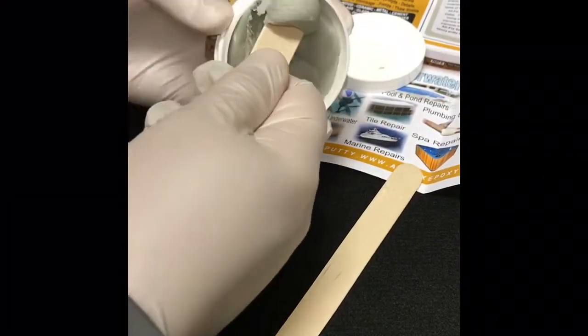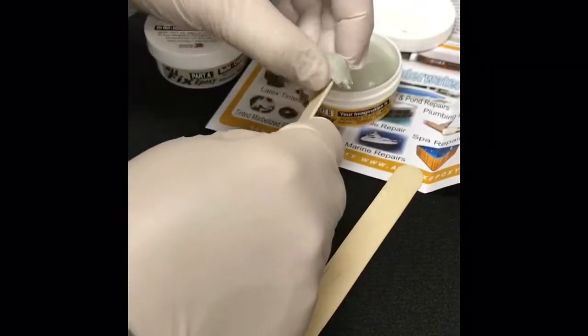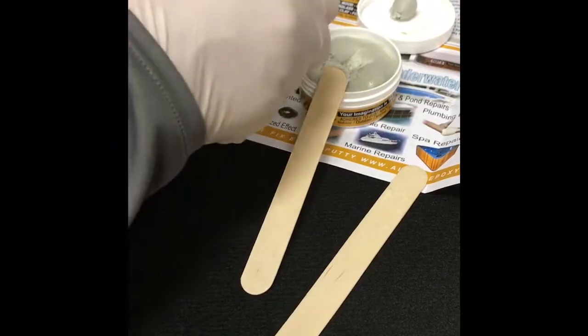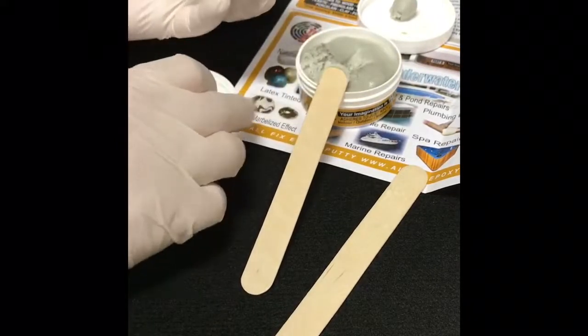Allfix is a self-hardening, two-part epoxy with a work time of one to three hours and fully cures rock hard in less than 24 hours.